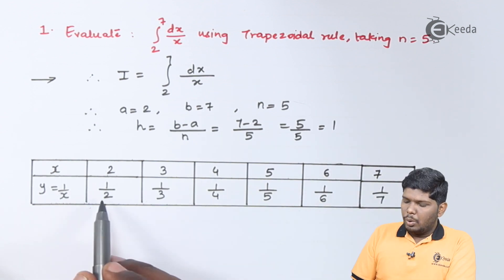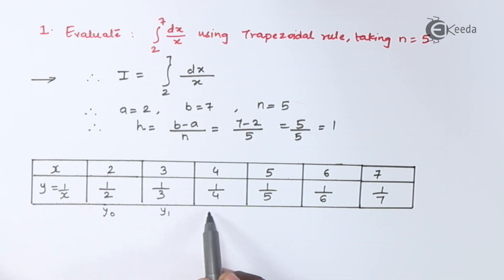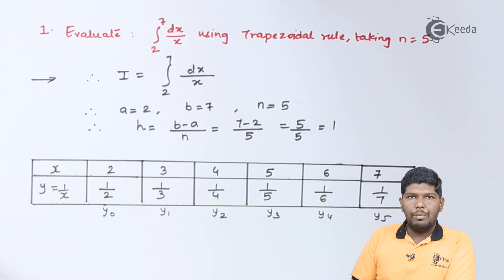After that you can number these terms as y0, y1, y2, y3, y4 and y5. Now let us write the trapezoidal rule.